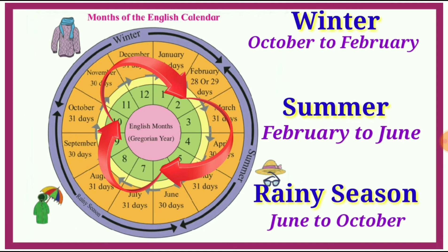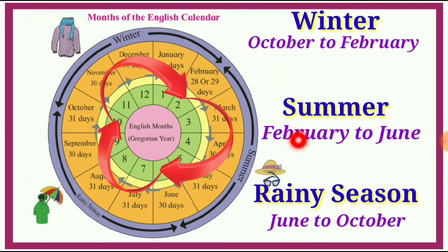Rainy season: June to October — June, July, August, September, October. Summary: Winter is October to February, Summer is February to June, Rainy season is June to October.